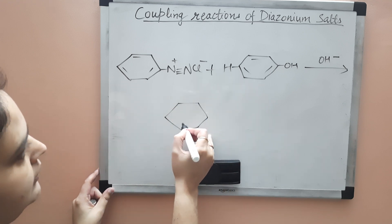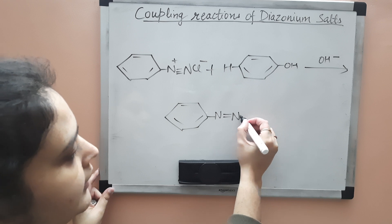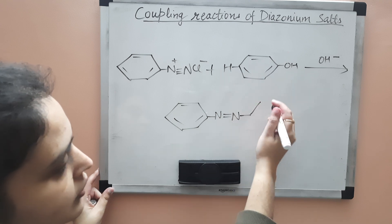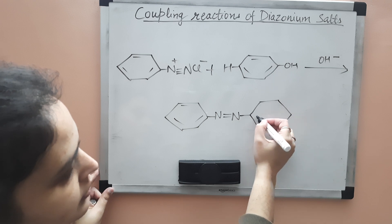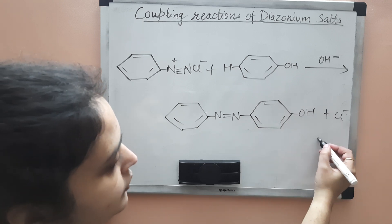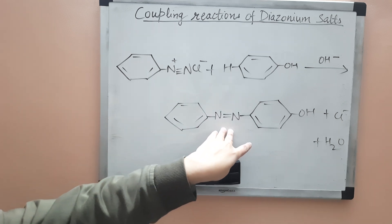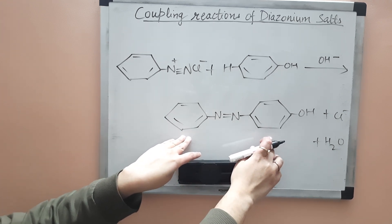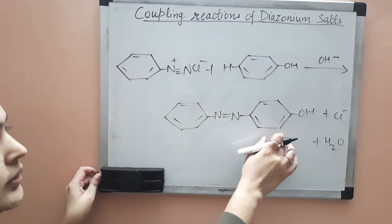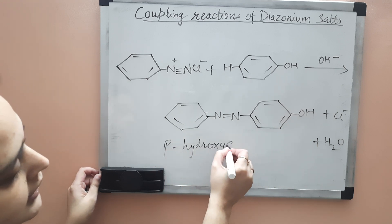What is formed here: the benzene ring with N=N retained, coupled at the para position of phenol. So the para position of phenol is coupled with the diazonium group. Along with this, Cl⁻ and water are also formed. This is called an azo compound because both aromatic rings are attached to the conjugated N=N group. This compound is known as para-hydroxy azo benzene.